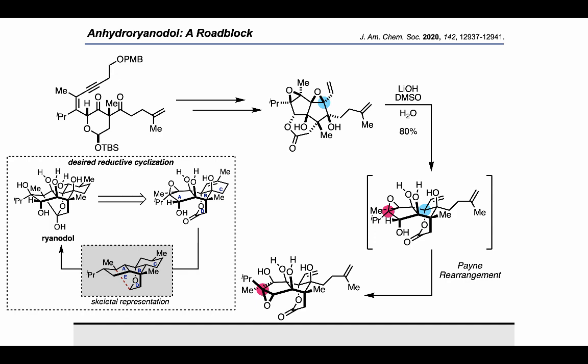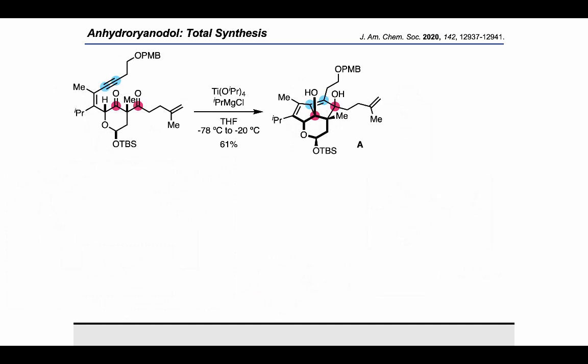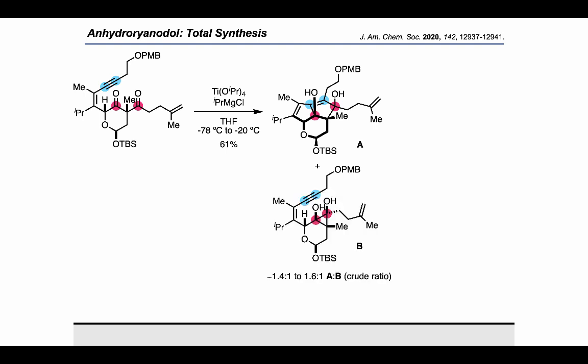With that, the authors decided to take a different approach, starting from the first intermediate on this slide. Treatment with titanium tetraisopropoxide and isopropyl magnesium chloride led to a cyclized product, via an annulation strategy that has previously received significant attention from this group. Interestingly, a dihydroxycyclopropane formed as a side product, and it was demonstrated that subjecting this byproduct to lead tetraacetate allows regeneration of the starting material through a Criegee oxidation.